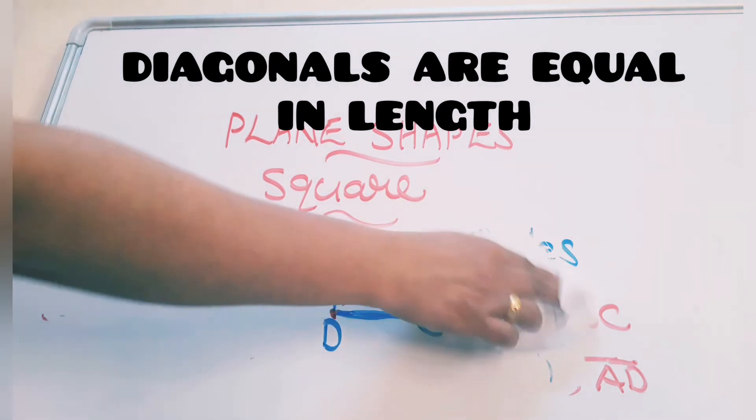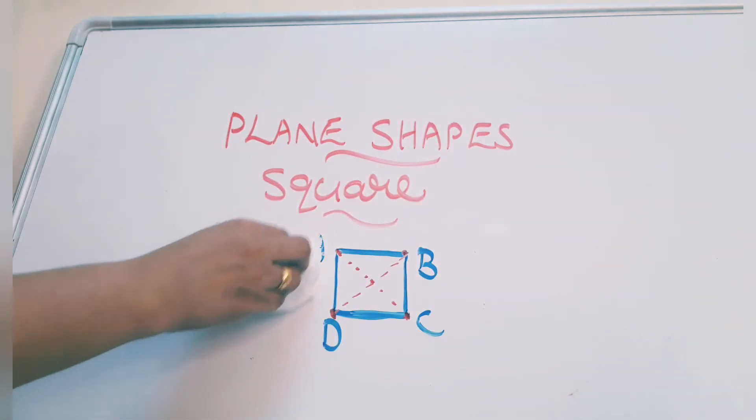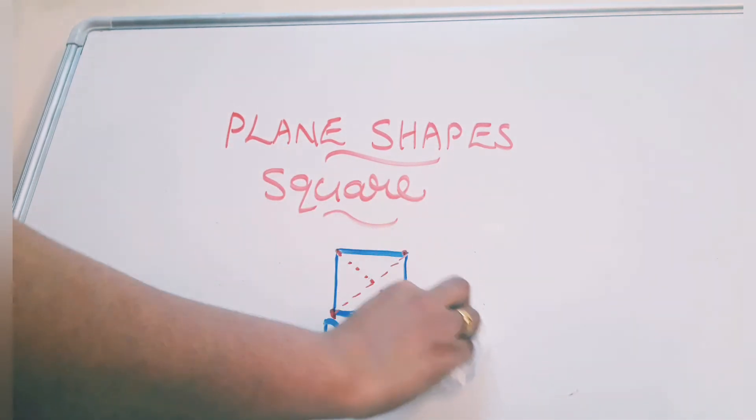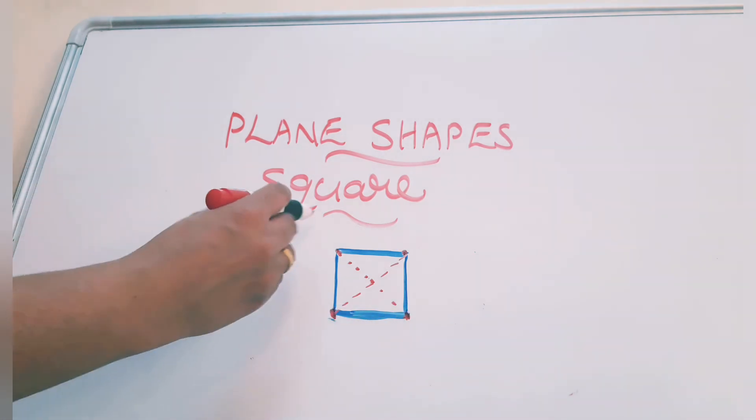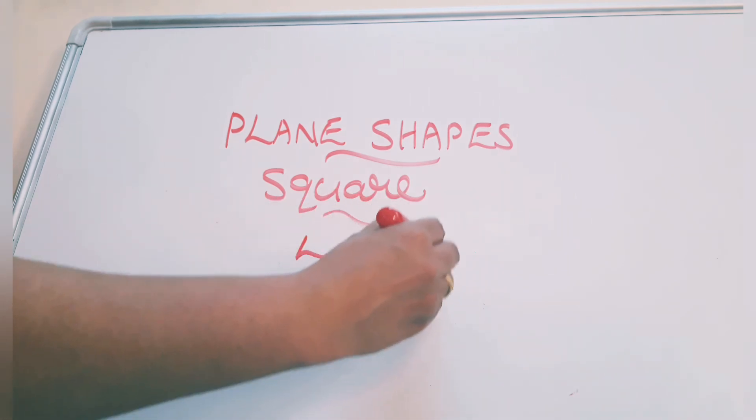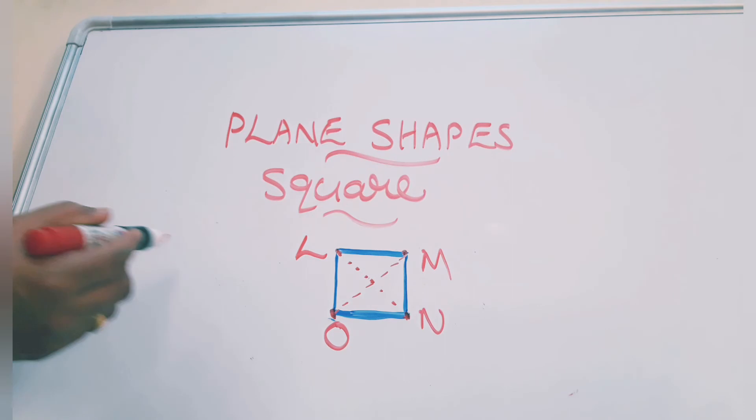Instead of A, B, C, D, I am giving some other names. L, M, N, O. Square LMNO.